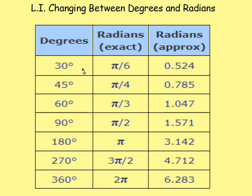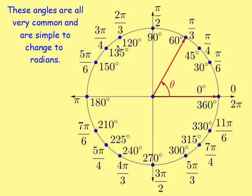There are certain angles that come up all the time — like 30, 45, 60, and 90. You need to really know them off by heart in radians. Most of them are easy enough, and these are the ones you see all the time, so you'd need to be able to switch between them. These ones are very, very common.